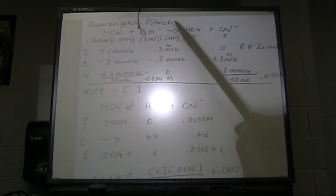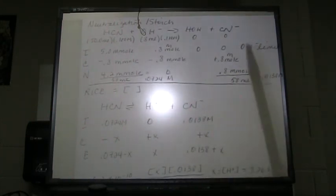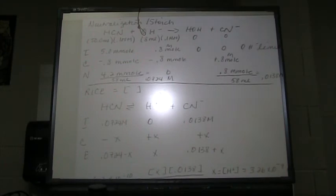Now you see the general way these problems go: neutralization stoichiometry problem, then an ICE table. That was part A. For part B, smart people are going to look at this and recognize the halfway point of the titration.